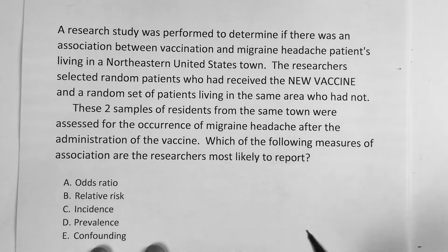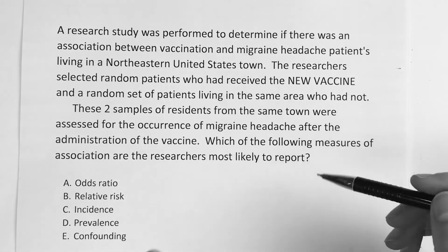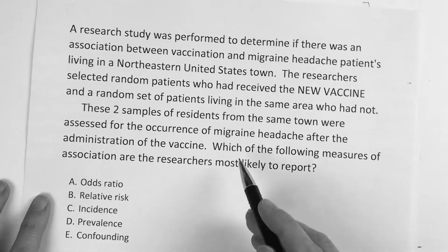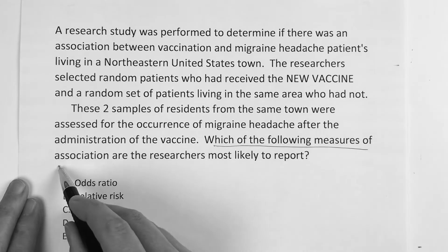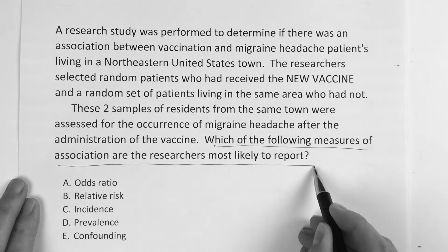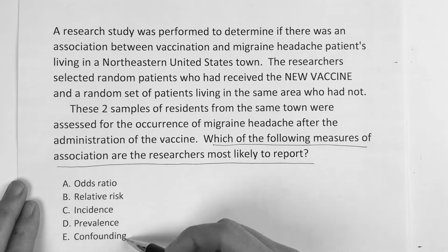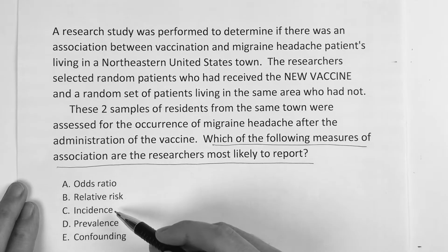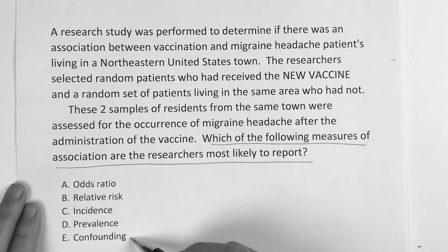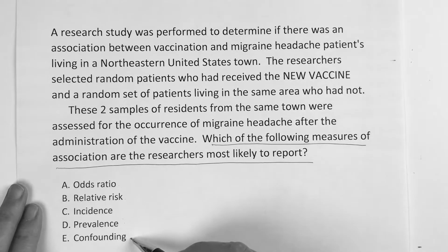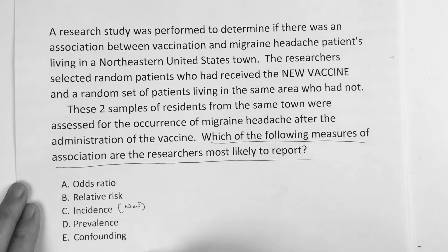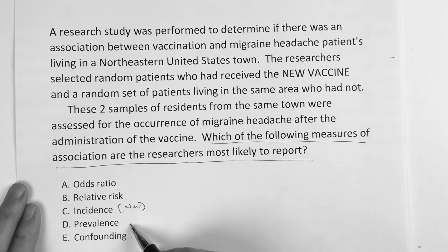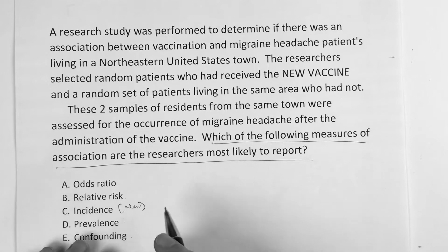All right, this next question is obviously another long one. So let's just read the question: which of the following measures of association are the researchers most likely to report? Looking at the answer choices: odds ratio, relative risk, incidence, prevalence, confounding. When I see incidence, that's number of new cases over a period of time. And confounding is the obscure one. But step one, step two, step three — they really want you to know the difference between odds ratio and relative risk.